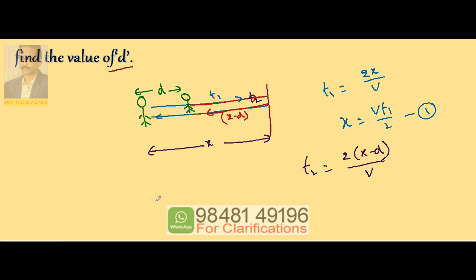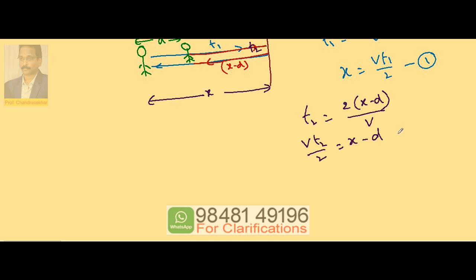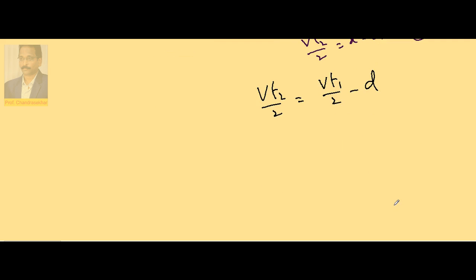This is the second equation. Now substitute the first equation's x value into the second equation. So vt2/2 is equal to vt1/2 minus d. Because our interest is only calculation of d, so d becomes equal to - taking this term to the right side and bringing this d to the left side - v/2 times (t1 minus t2).